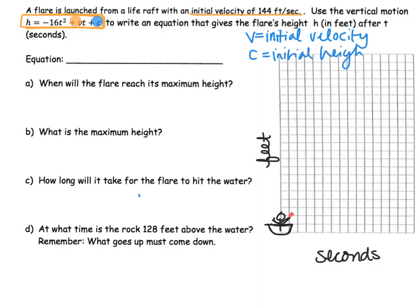So whatever height the thing is dropped from or shot from or bounced from or thrown from. And so knowing that we can say that h equals negative 16t squared plus our initial velocity of 144t plus our initial height of zero. Because if we're sitting in a life raft,